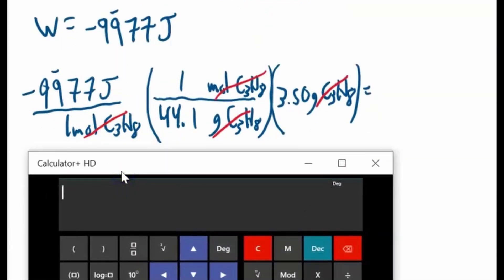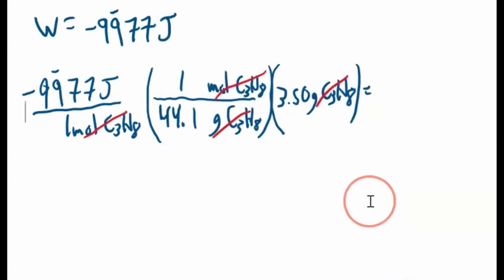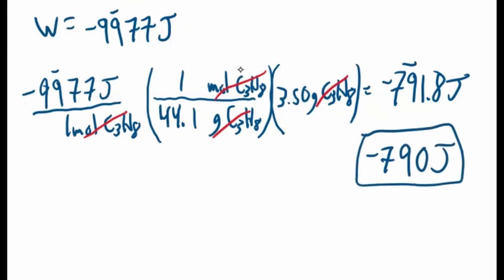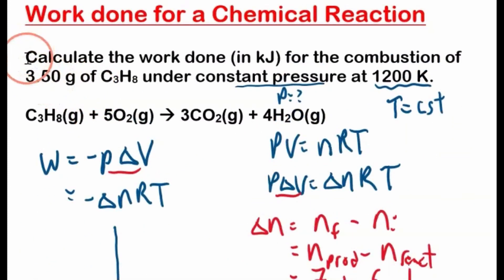We have - I could have kept that number - negative 99.77 divided by 44.1 times 3.5 is negative 791.8. Negative 791.8 joules. And that's how many joules of work. We'll round it to 2 sig figs. So negative 790 joules of work performed if these 3.5 grams of C3H8 react.